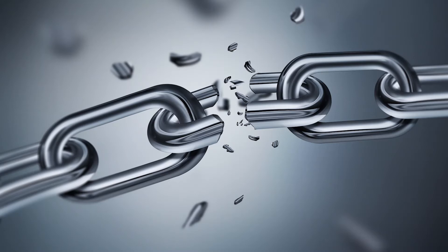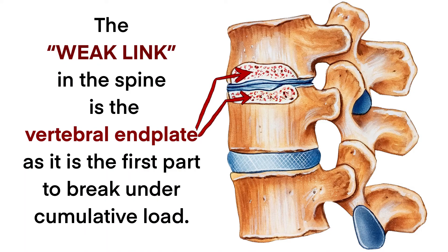In this way, the healthy intervertebral disc handles most of the load on the spine. However, with continued load on the spine, the vertebral body end plate turns out to be the weak link and is the first structure to crack under pressure. In contrast to the vertebral bone, the end plate is made of a softer cartilage material and thus is more susceptible to damage.